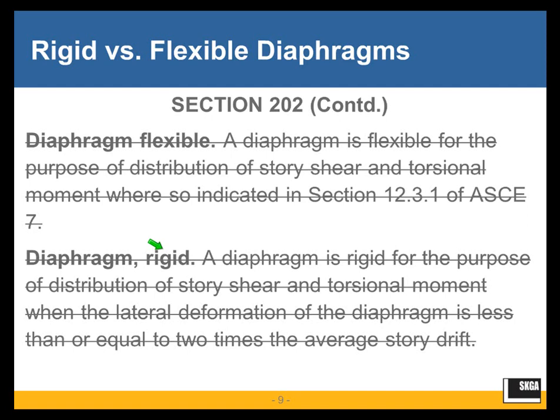Rigid diaphragm was defined as shown here. A diaphragm is rigid for the purpose of distribution of story shear and torsional moment when the lateral deformation of the diaphragm is less than or equal to two times the average story drift. In other words, a diaphragm that is not flexible by calculation is a rigid diaphragm. Because of this definition, we could get away without doing semi-rigid diaphragm analysis. That's what IBC told us.